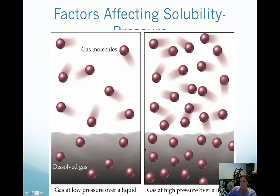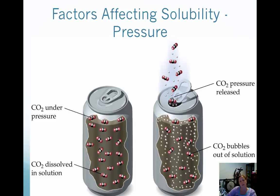Here are two diagrams worth drawing: gas at low pressure over a liquid showing dissolved gas and gas molecules trying to enter, and at high pressure, more gas molecules are pushed into the solvent. Another example shows a soda can: the carbon dioxide is under pressure, holding it dissolved in solution. As soon as you pop the top and release the pressure, the gas escapes and the bubbles come out of solution. This is when your soda goes flat if left out too long.